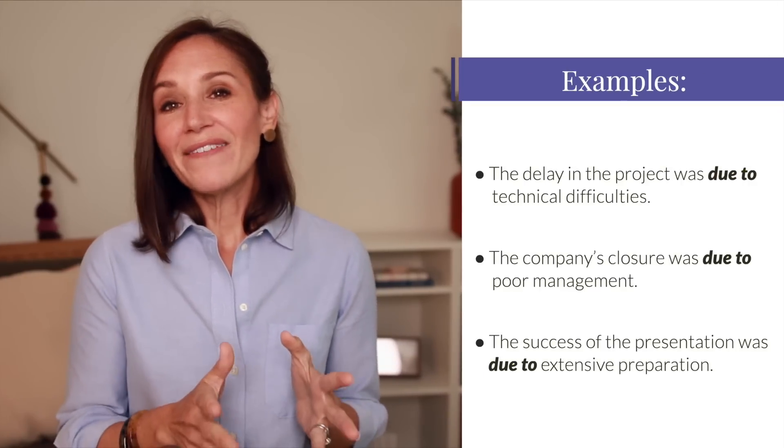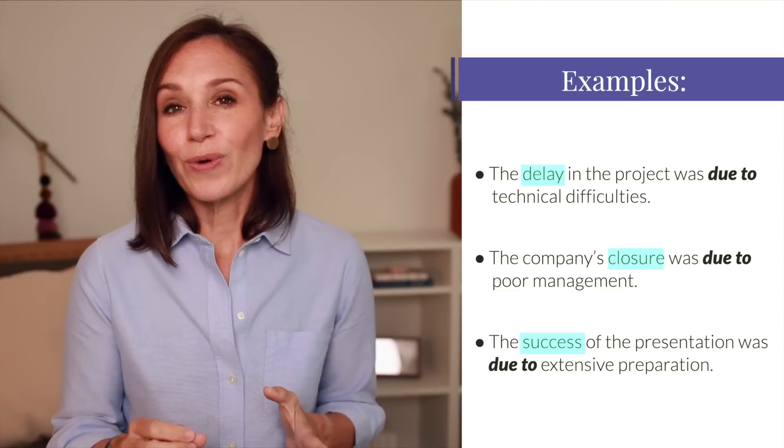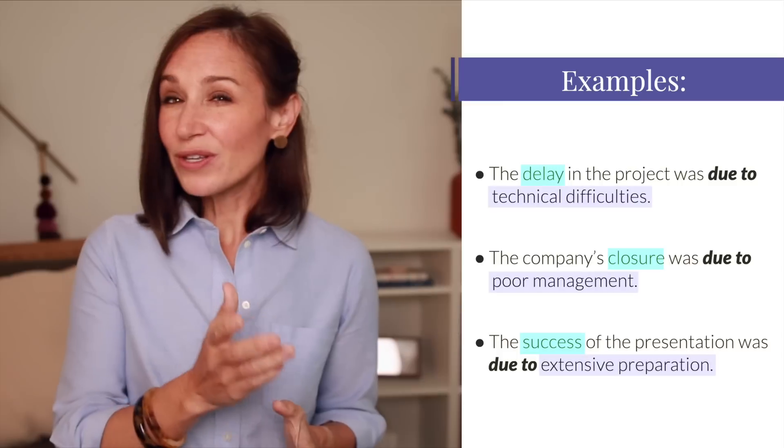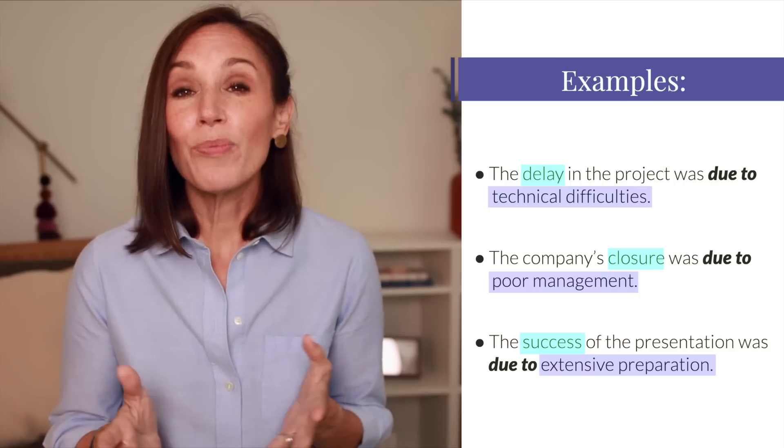Let's continue to explore the grammatical structure of 'due to' and how it differs from 'because of.' We learned that 'because of' is an adverbial prepositional phrase used to modify verbs. 'Due to,' by contrast, is an adjectival prepositional phrase, and just like any adjective, it's used to modify nouns or noun phrases. In those example sentences, the noun is highlighted, and 'due to' answers the question: what was the cause? What was the cause of the delay? Technical difficulties. What was the cause of the closure? Poor management.